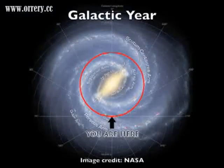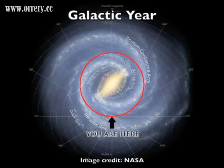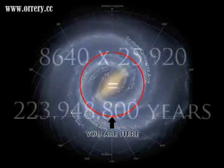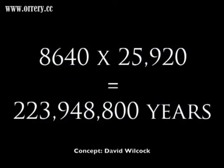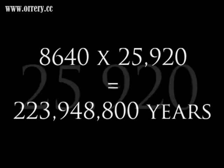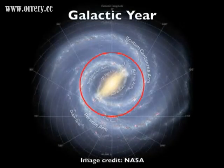The Milky Way galaxy has a rotational period that I like to call the galactic year. It lasts approximately 224 million years. Our solar system is related to the larger cycle through number — there are 8,640 great years in the galactic year. It's amazing how the Earth's precessional cycle, the number of the sun, and the decade harmonize with the galactic year.